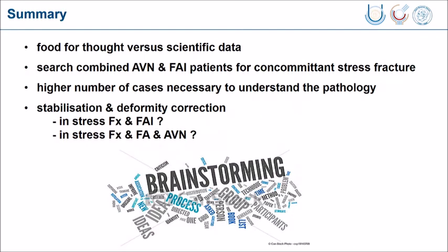I just wanted to share this as a kind of brainstorming - it is food for thought for our discussion. I think when we have cases with combined AVN and impingement, we should look more carefully for mild signs of concomitant fractures. We need more cases, and perhaps you have some we can pool to better understand the pathology. At the moment, although there is no clear recommendation in the literature, we would tend to fix the stress fracture and treat the deformity when they co-exist. But I am not really sure what to do when there is additional avascular necrosis, because two out of our three patients did not do well despite our best efforts. Thank you very much for your attention.